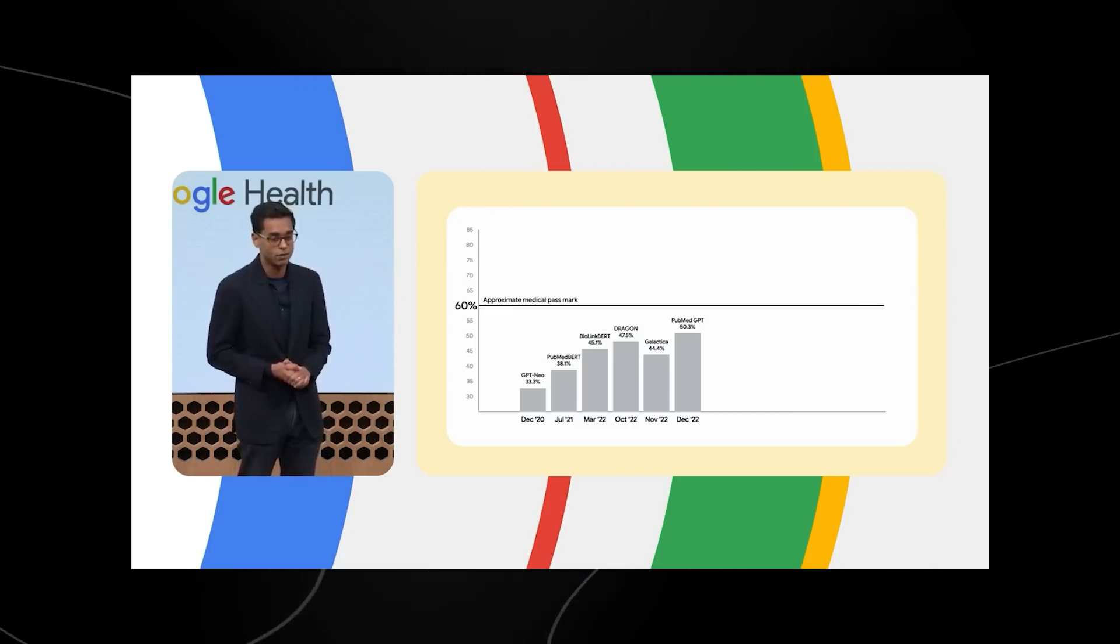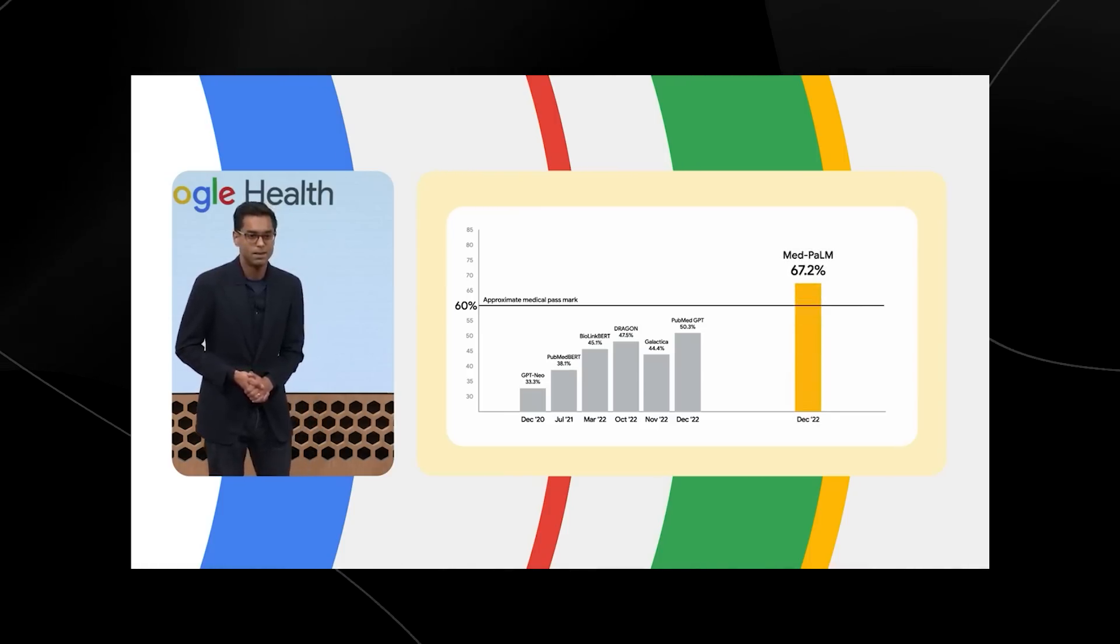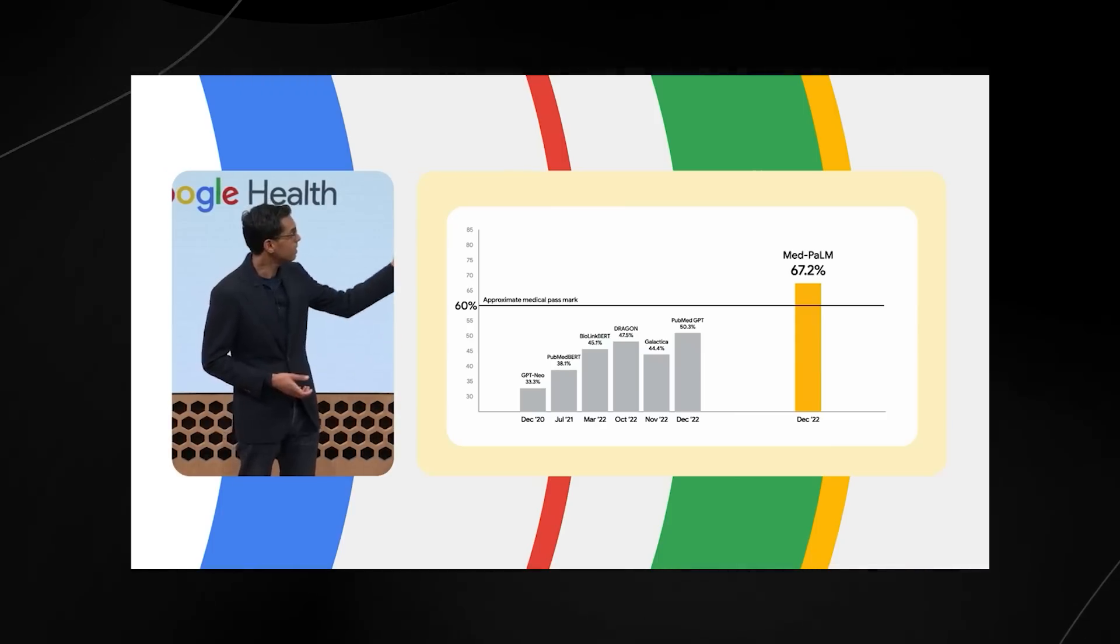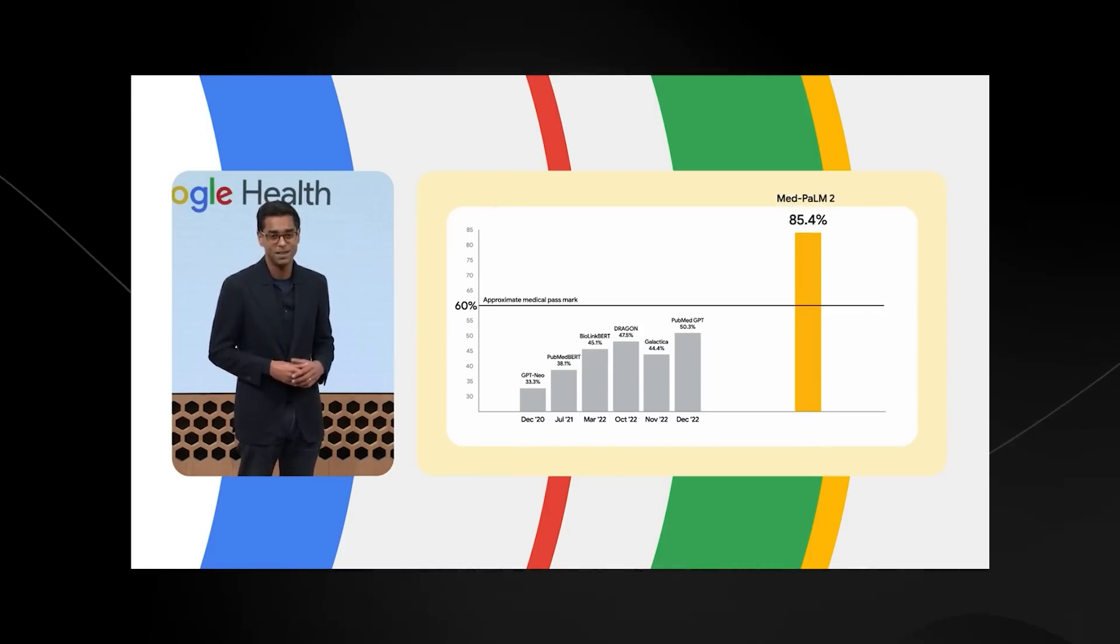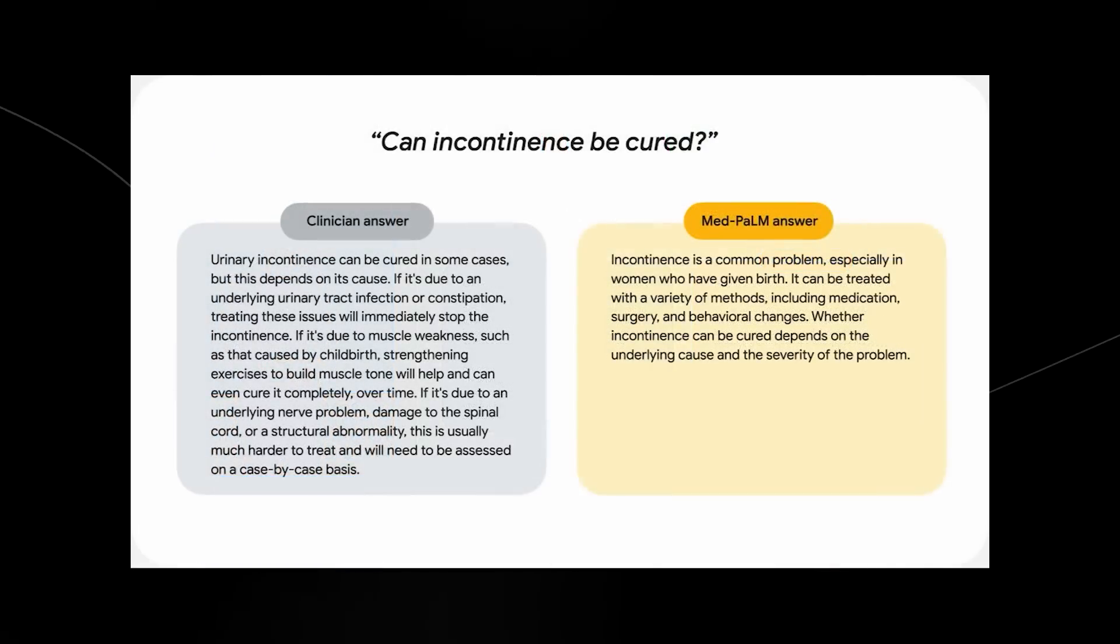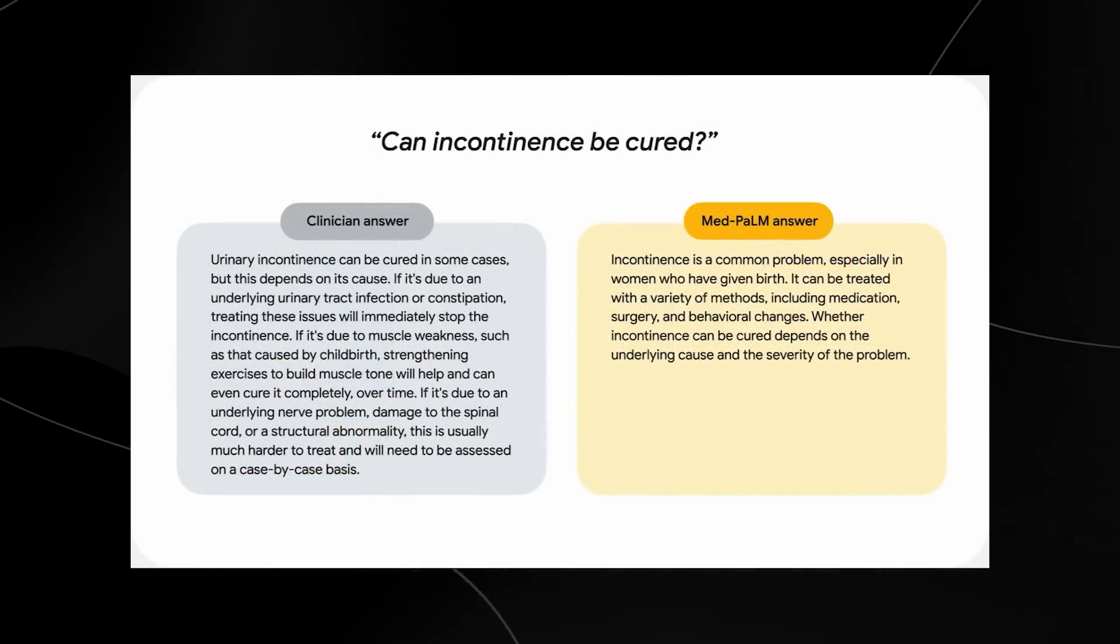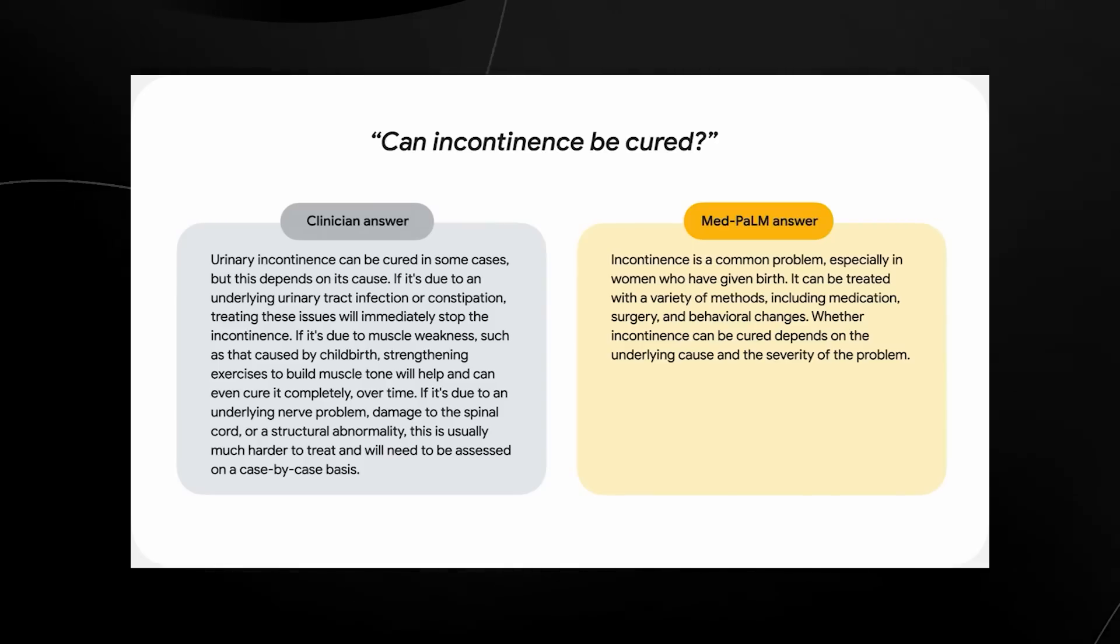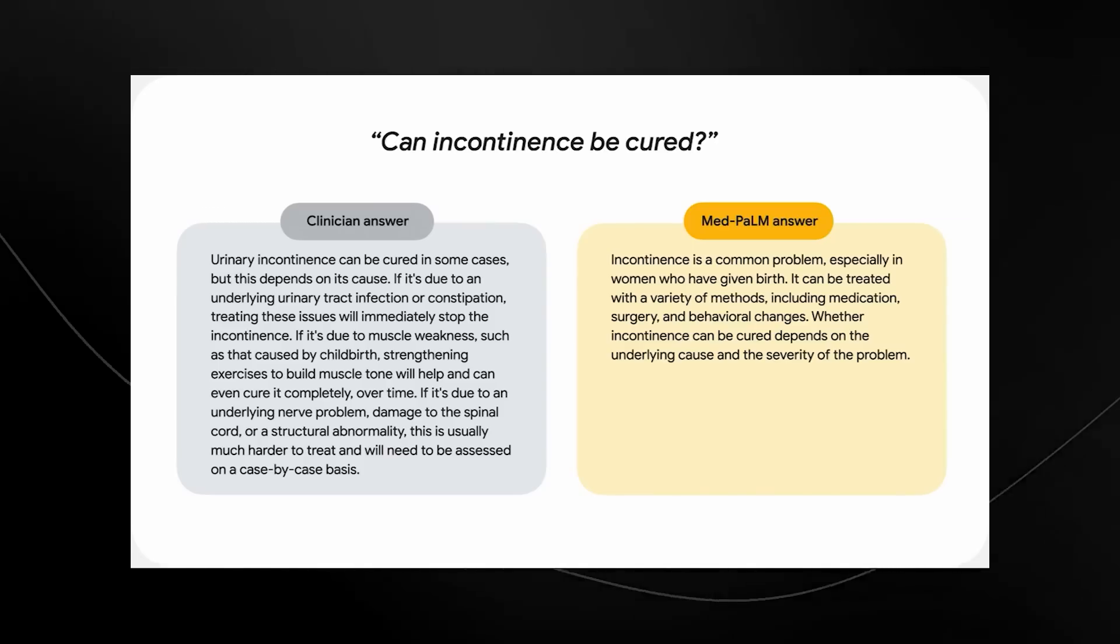When they released the first version of MedPalm, based on Palm 2, they immediately got 67.2%. The version we have now is currently around 87%. What's interesting is that you can see clinicians' answers compared to MedPalm's answers. They decided to rate these answers on a completely new rating system to see if MedPalm's answers were actually good.